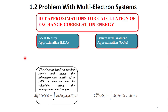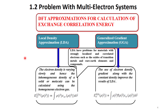What is the problem with multi-electron systems and why do we need approximate methods to tackle them? For multi-electron systems, the major problem arises from the presence of the inter-electronic repulsion terms. This term creates problems in the solution, and therefore approximate methods are used to solve the Schrödinger equation for such multi-electron chemical systems.